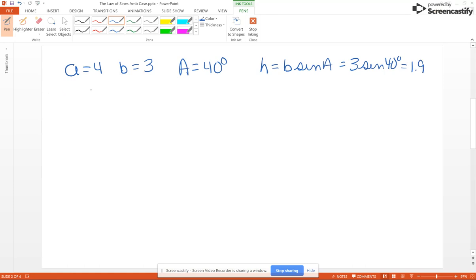Now we have that A is bigger than B and we have that A, which is 4, and H is 1.9. A is bigger than H also, so this is one triangle.